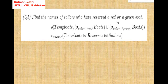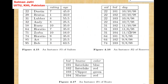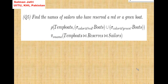Find the names of sailors who have reserved a red or a green boat. We will create a relation called temp_boats. We select tuples from boats where color equals red, and union it with tuples from boats where color is green. The output will be red and green tuples — this tuple, this tuple, and this tuple are selected, so three tuples total.